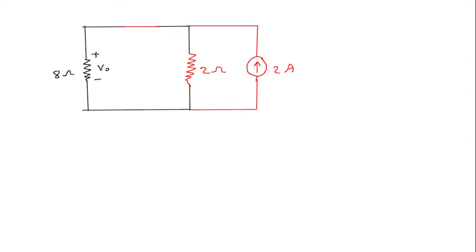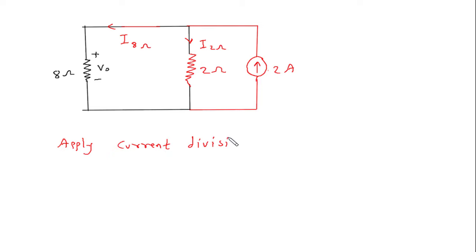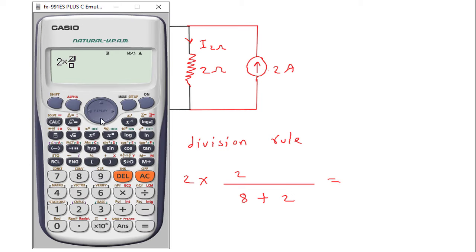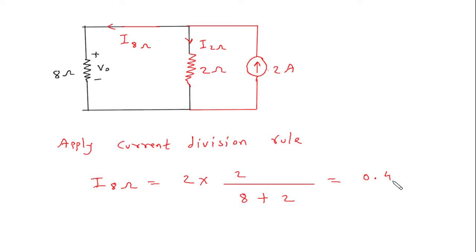2 ampere. Now we have, let's say this is current I8 ohm and this is current I2 ohm. Apply current division rule. So according to current division rule, I8 ohm is equal to this current which is 2 ampere, times the opposite branch resistance 2 ohm, divided by total 8 plus 2. So this is 0.4 ampere.